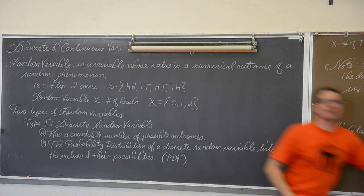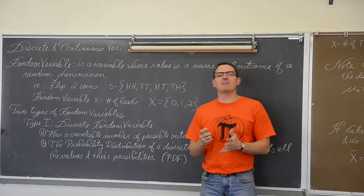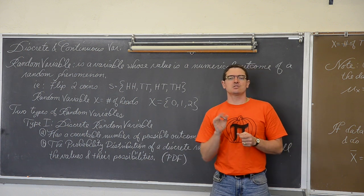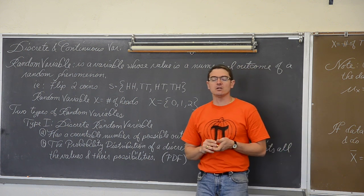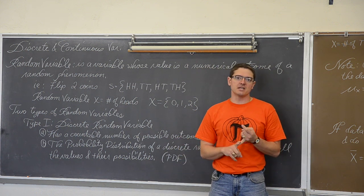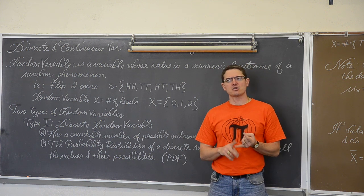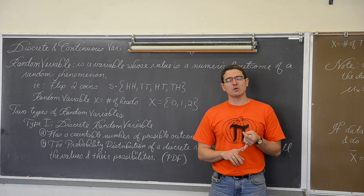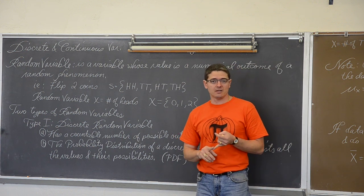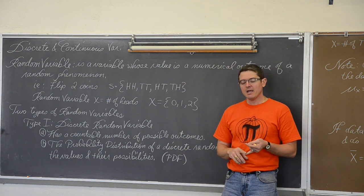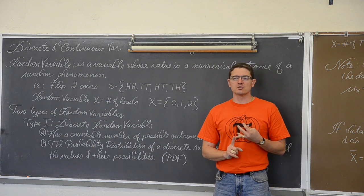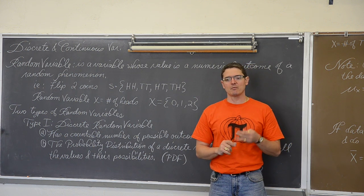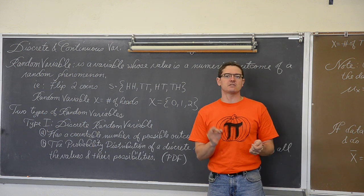In this video we are going to do a fair amount of review. We are going to define two types of variables that you have already learned how to deal with: continuous random variables, which you started working with when you learned z-score calculations and the normal distribution, and discrete random variables, which is the setting from the probability chapter where we rolled a die and there were six specific outcomes.